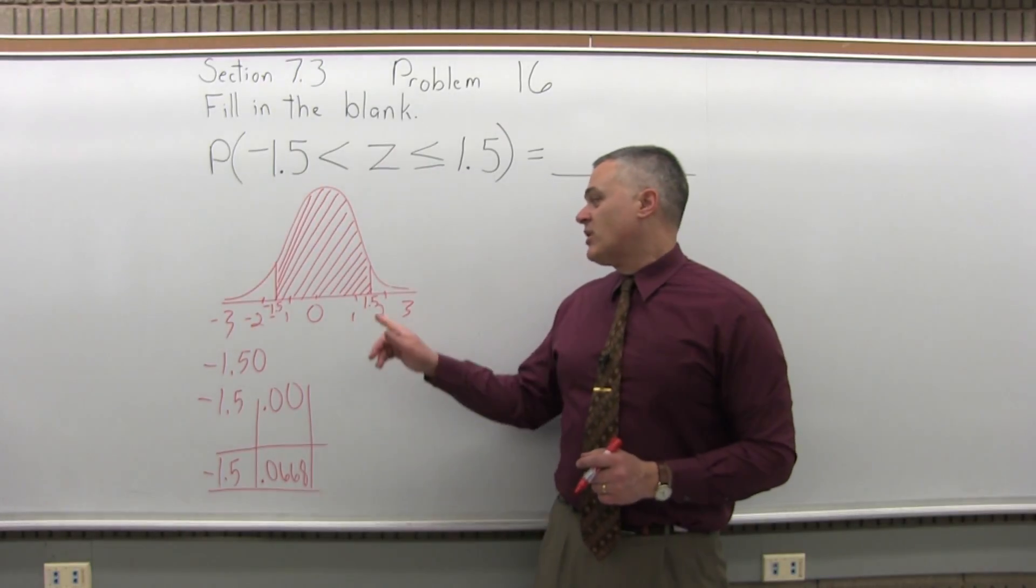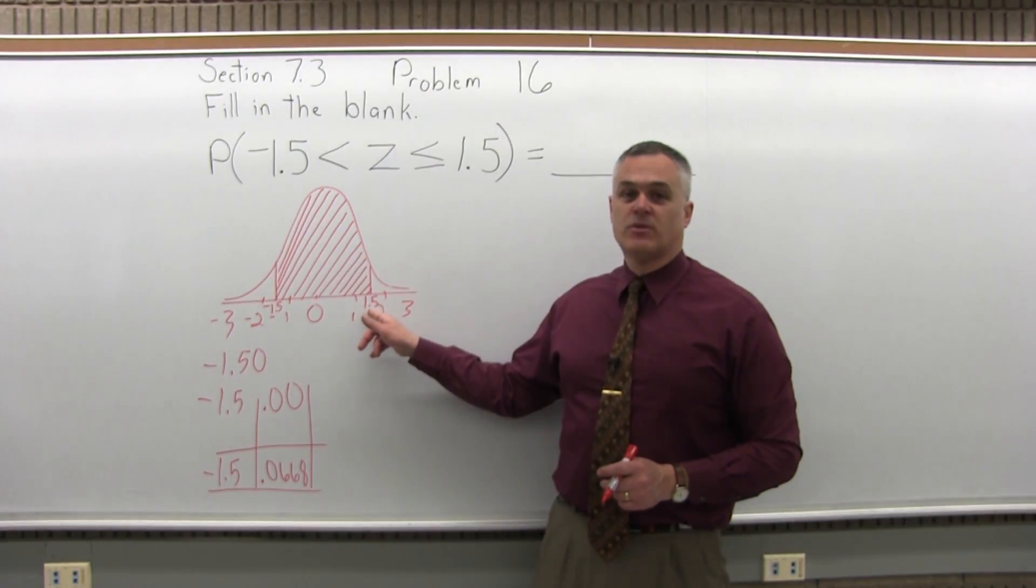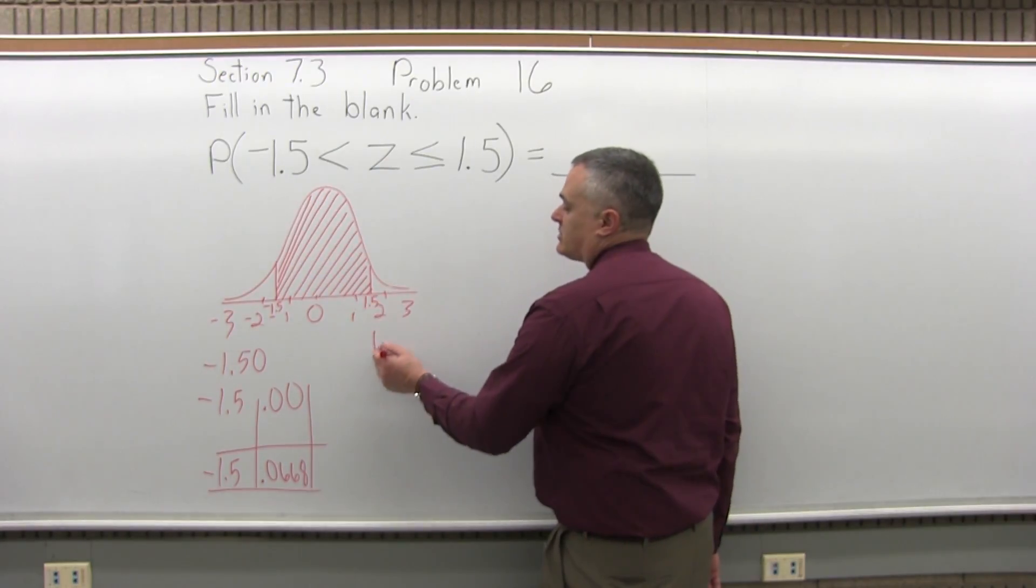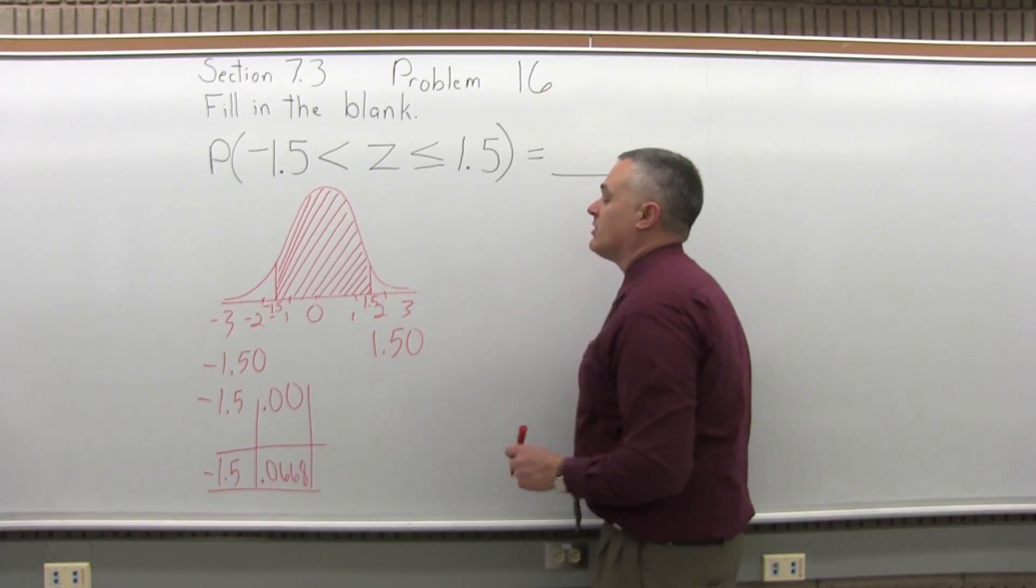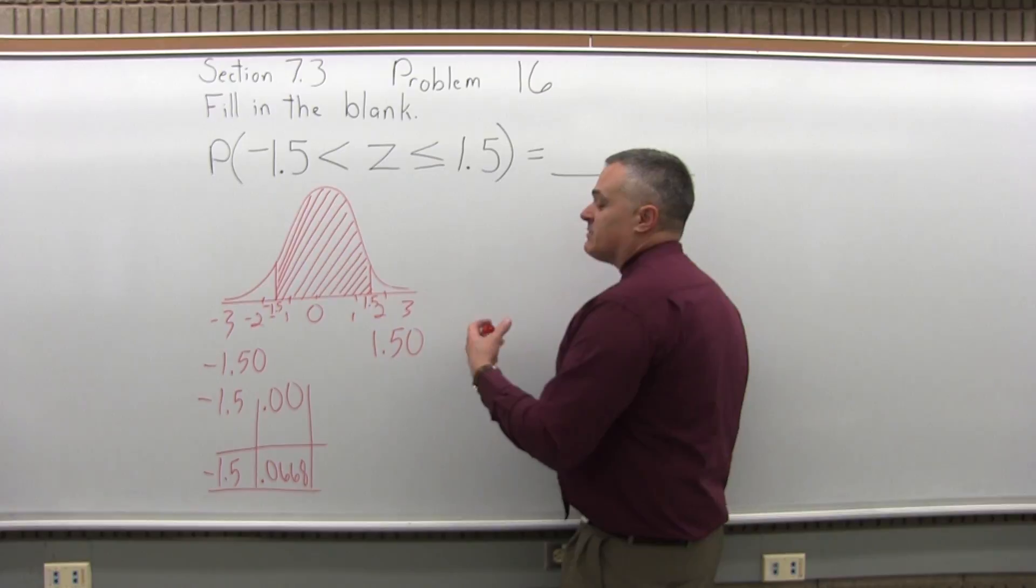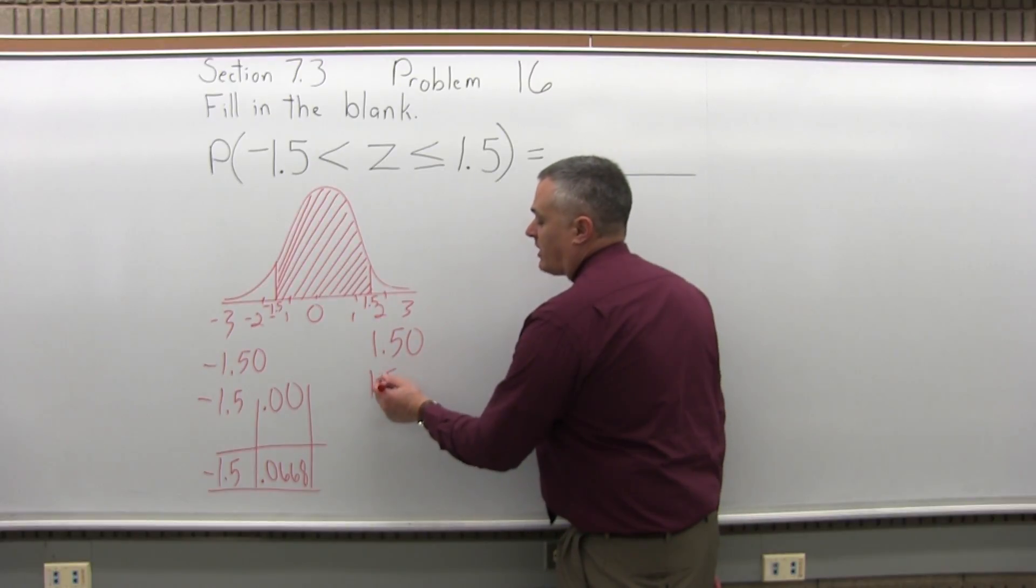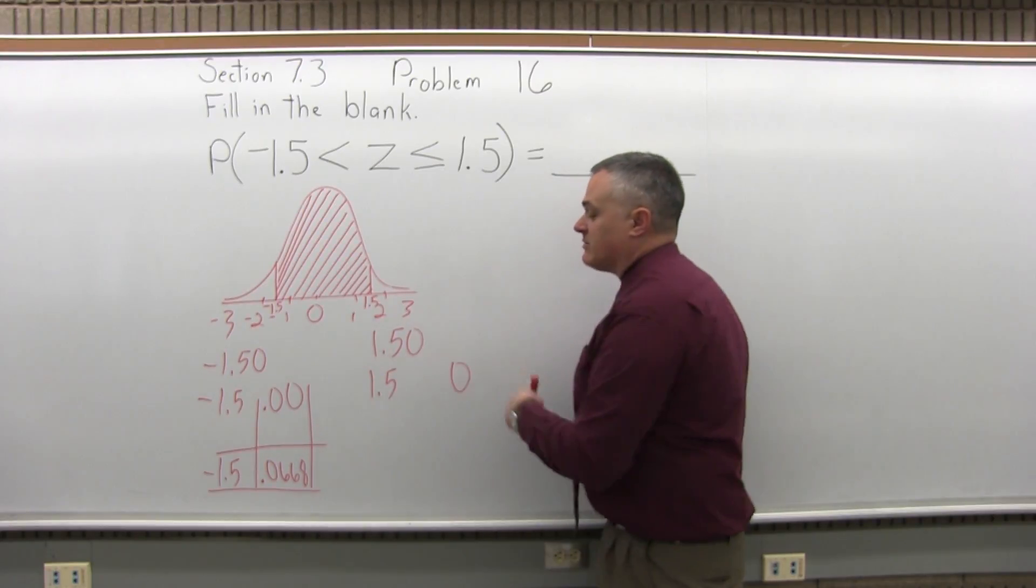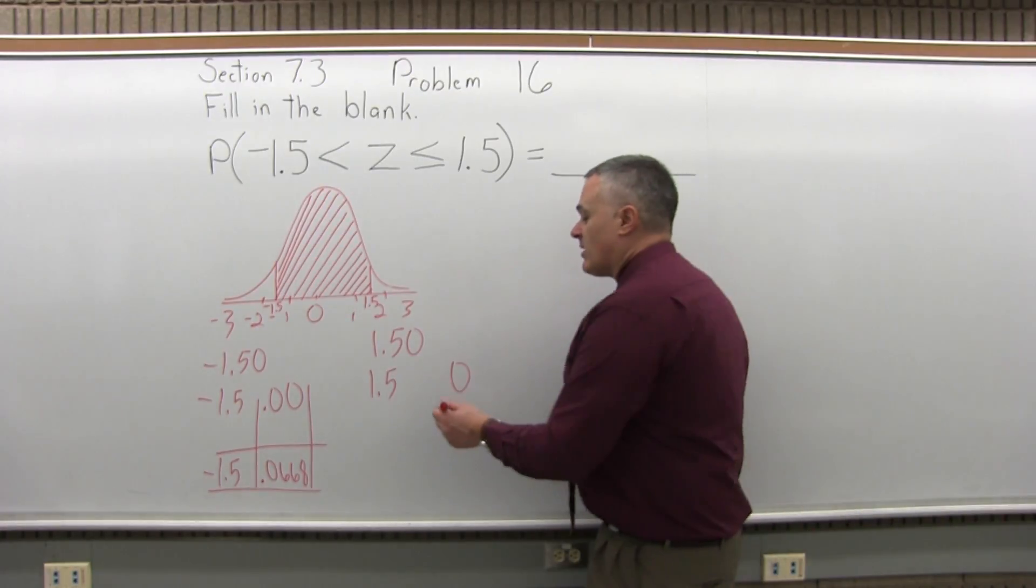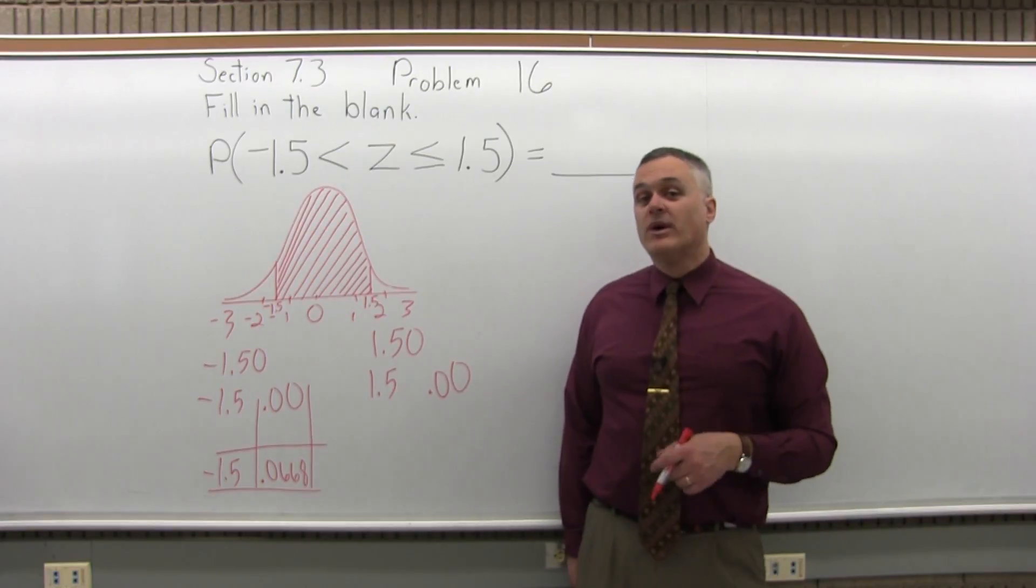So do the same process for the positive 1.5. Step 1, write the number to look up so that it has two places after the decimal. So the 1.5 gets written as 1.50. The second step is split the number into two parts by pulling off the rightmost digit. So that 0 comes off to the side. Step 3, put a 0.0 in front of the rightmost digit that you pulled off. So it gets written as 0.00.